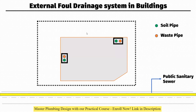External fall drainage system in buildings. As you can see, we have an external building layout. This is your main road in which a sanitary pipeline is running in front of the building. Inside the building, we have two shafts at different locations for sanitary waste pipes.